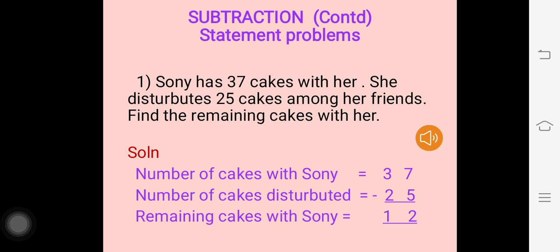We have to find the remaining cakes with her. When the word 'remaining' comes, it means we have to subtract and find the difference. Number of cakes with Soni is 37; number of cakes distributed is 25. When we subtract 25 from 37, the difference or remaining cakes with Soni will be 12.